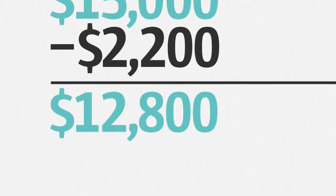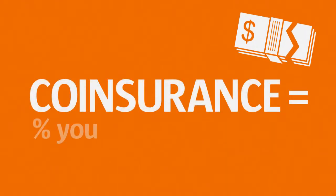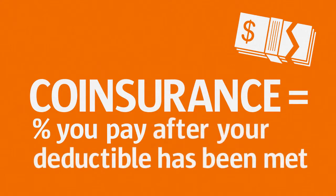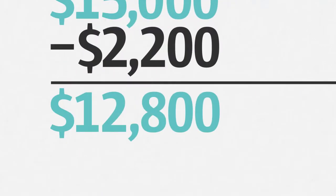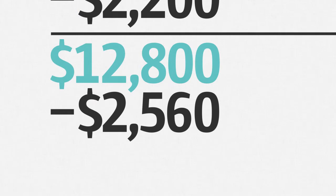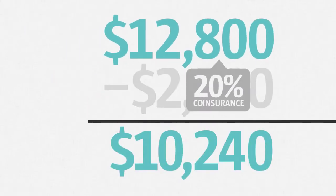John's plan also has 20% coinsurance. Coinsurance is the percentage of charges for certain covered services that you pay after your deductible has been met. So that means John needs to pay an additional $2,560, or 20% of the remaining $12,800.